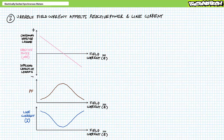You'll recall that squirrel cage induction motors necessitate the constant consumption of positive reactive power necessary to power the rotating magnetic field and drive the process of induction central to their operation. Electrically excited synchronous motors, in contrast, don't operate using induction but rather have two independent interacting magnetic fields. If the rotor field is weak, the stator needs to draw reactive power, as would a squirrel cage induction motor. If, however, the rotor field increases in strength, the stator doesn't need to consume as much reactive power, thus line current decreases and power factor increases. Additionally, one can overexcite the rotor so much that the stator appears to be capacitive in nature and supplies reactive power. This can be used to power factor correct other loads, as we'll examine in the upcoming synchronous condensers lectures.